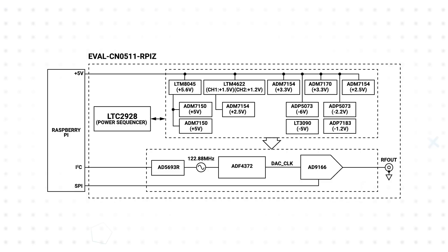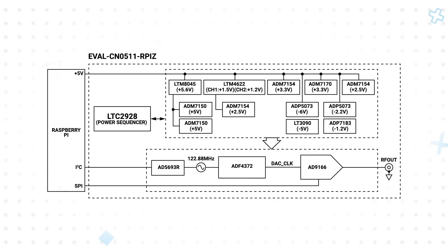The sampling clock is generated from the ADF4372 synthesizer using a voltage-controlled crystal oscillator as its reference clock, which can be trimmed for increased accuracy using the AD5693R voltage output DAC. Power is derived from the Raspberry Pi using several ultra-low noise, high-PSRR regulators to minimize the impact on RF performance.